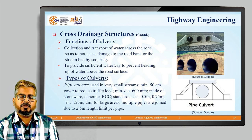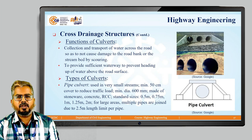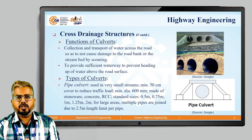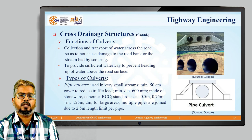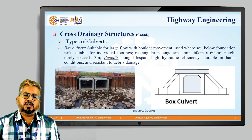The first type of culvert is the pipe culvert, which can be seen in the figure on the right-hand side. The pipe culvert is used for very small streams with a minimum cover of 50 centimeters to reduce traffic load. The minimum diameter is 600 mm, made up of stoneware concrete or RCC. Standard sizes are 0.5 meter, 0.75 meter, 1 meter, 1.25 meters, and 2 meters. For large areas, multiple pipes are joined together due to the 2.5 meter length limit per pipe.